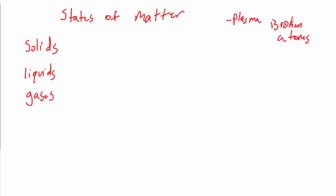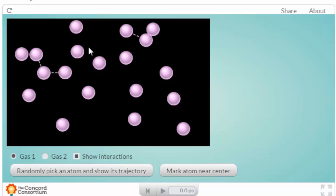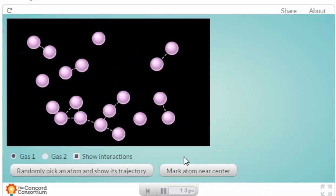So solids and liquids and gases. Let's start with gases. They're the ones that make the most sense in terms of kinetic theory. Alright, here we go. These are atoms of gas, and I can tell they're atoms because they're individual particles. They're not bonded together. They're just individual atoms of gas, and I'm going to go ahead and start playing this simulation.